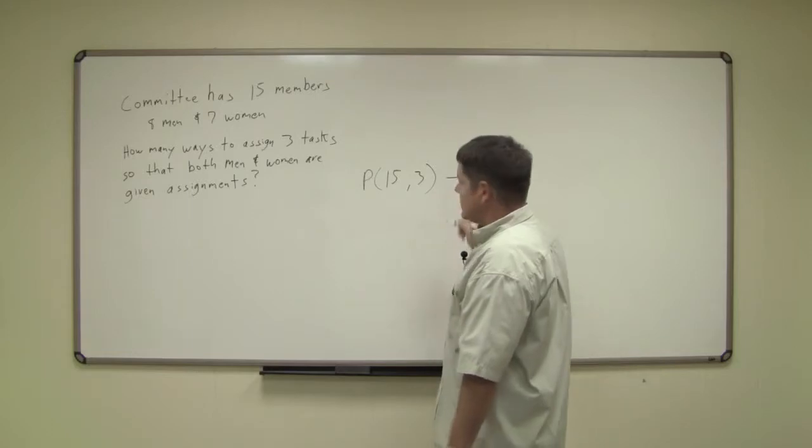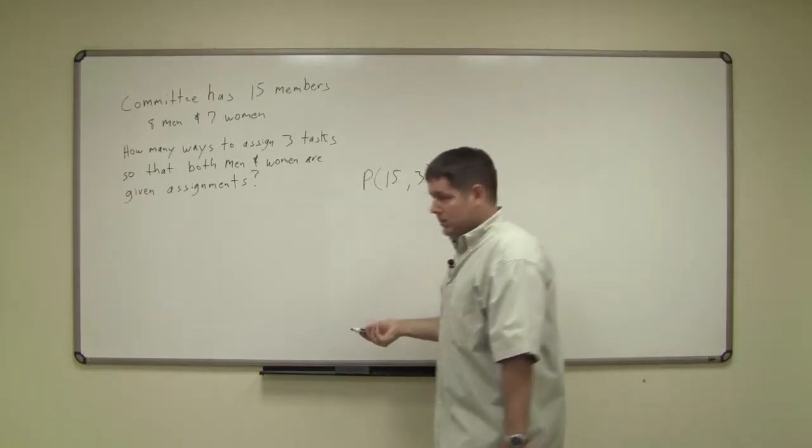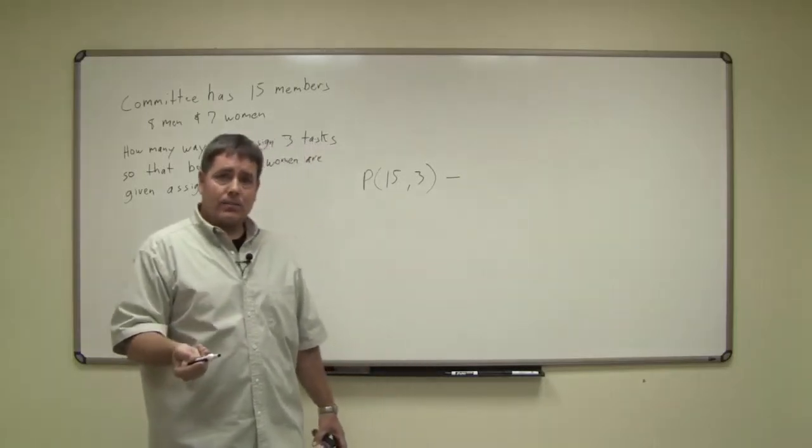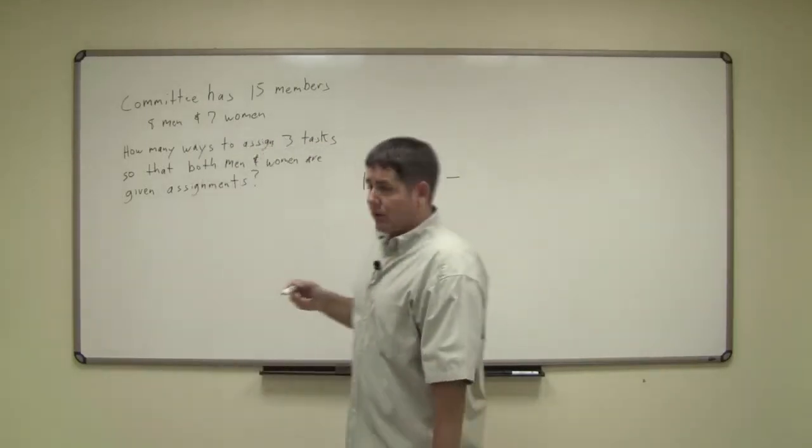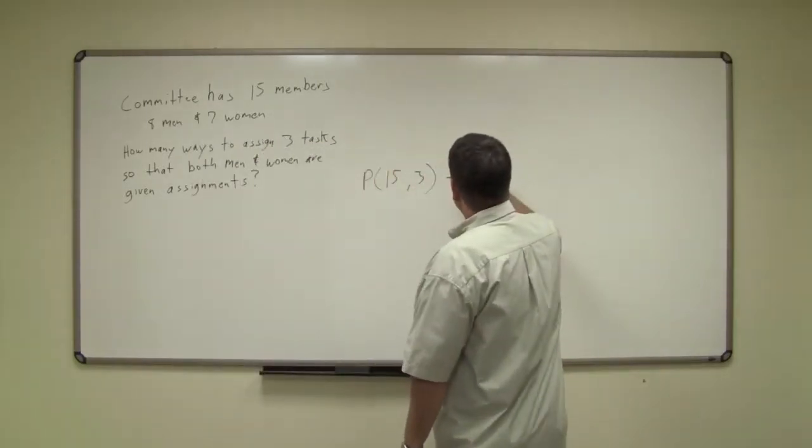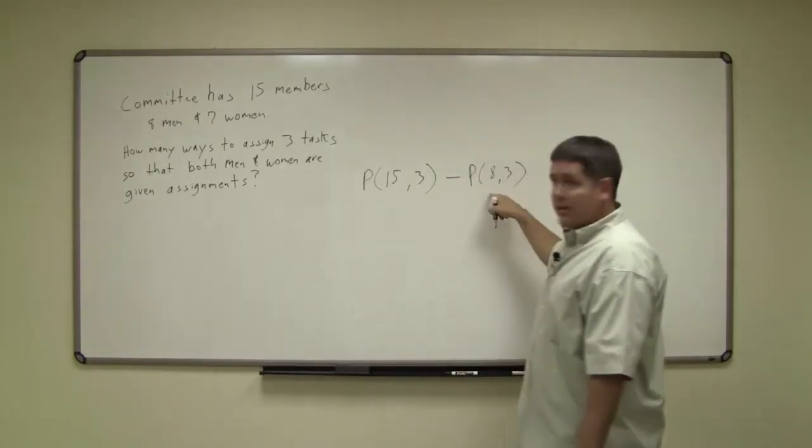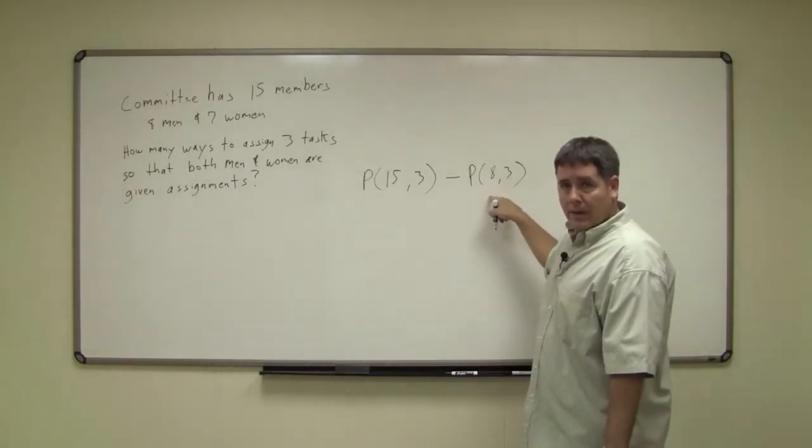The complement means you subtract away the unfavorable outcomes. One unfavorable outcome is that we end up with all men. How many ways are there to get all men? There are eight available men, choose three. This tells us you got all men.